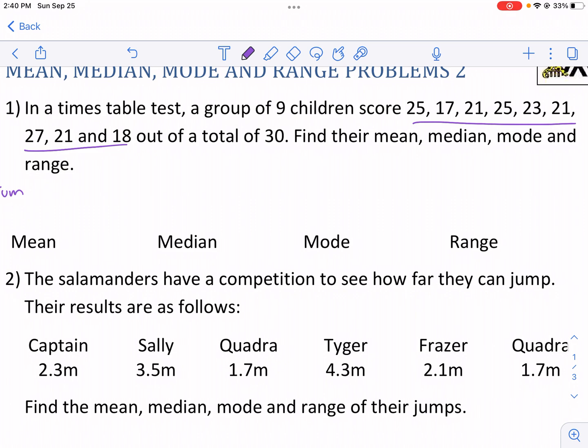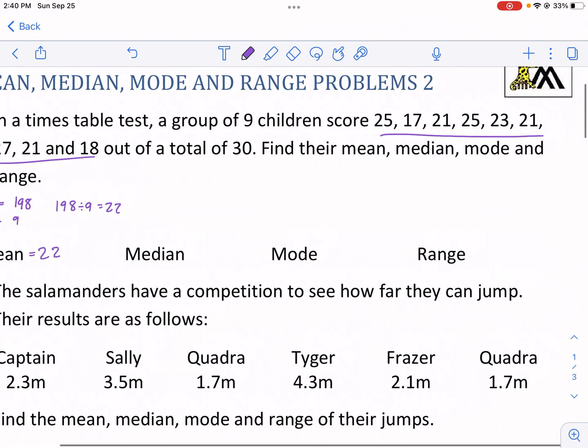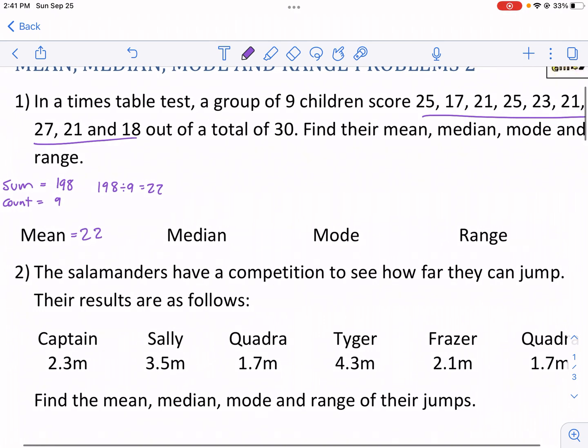So I'm just going to take all nine of these scores and add them together. 25 plus 17 plus 21 plus 25 plus 23 plus 21 plus 27 plus 21 plus 18. That should give me 198. Now I'm going to divide that by nine, and I should get 22. So our mean is 22.